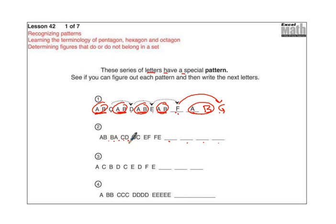AB and BA. CD and DC. You can see that it goes AB, and then it reverses the order. CD, and then it reverses the order. EF reverses the order. So we have A, B, C, D, E, F, G, H are the next two letters of the alphabet. That goes forward, and now we're going to go backwards. So we're going to put the G here and the H there.